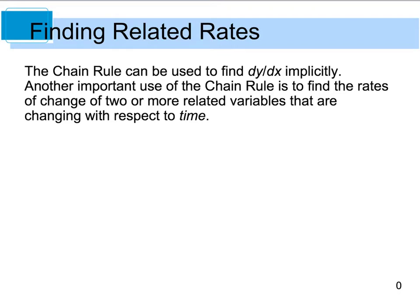Another important application of the chain rule is to find rates of change of two or more related variables that are changing with respect to time. This is where the term related rates comes into play.